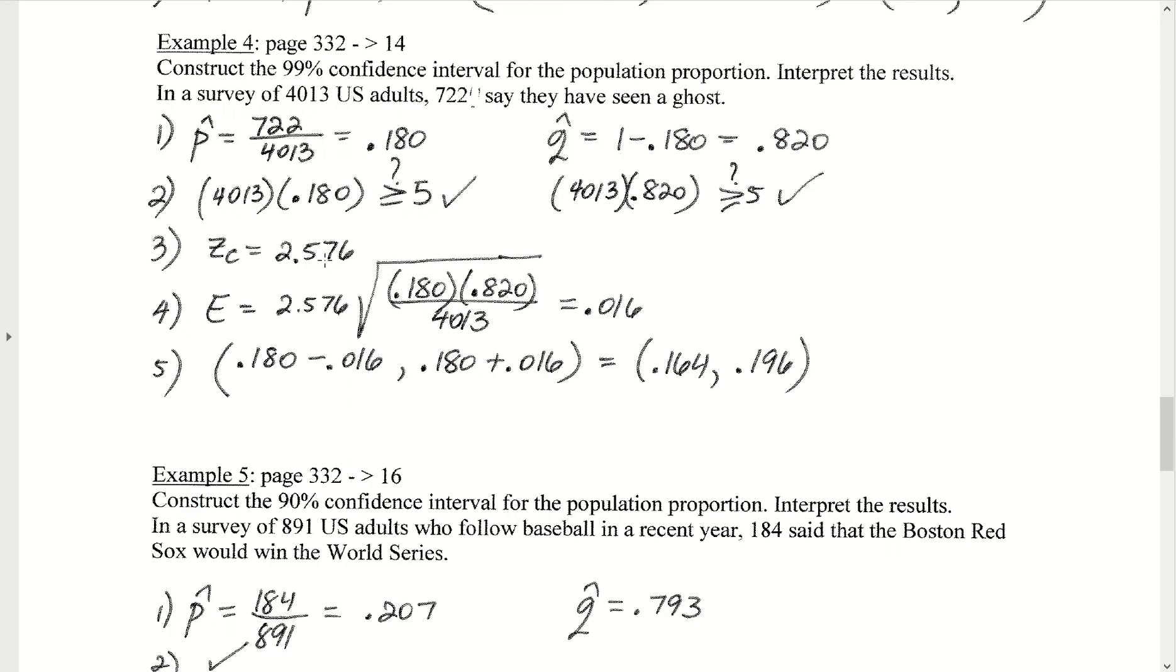Once we have Z-critical, we can plug Z-critical in, plug in p-hat, q-hat, N. Don't forget that that fraction is under a square root. If you do this computation, we will get a margin of error of 0.016.